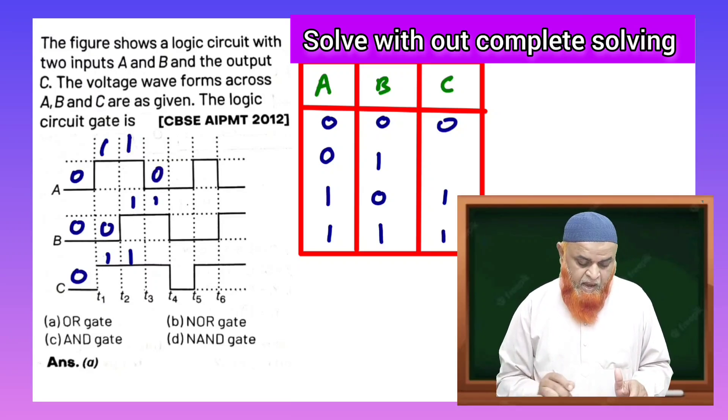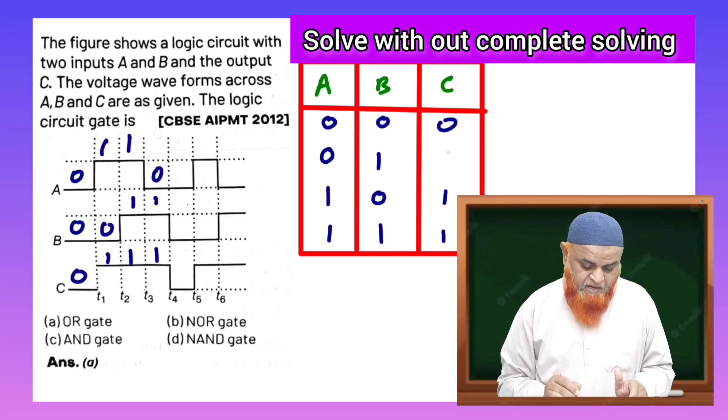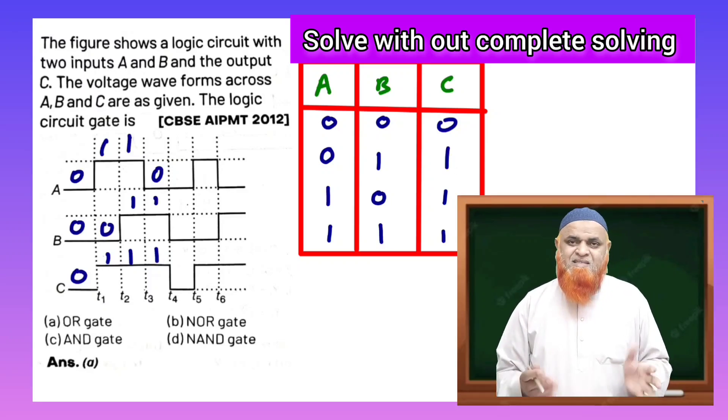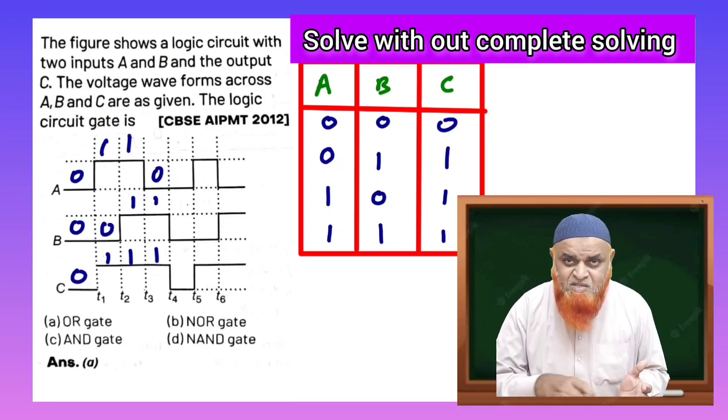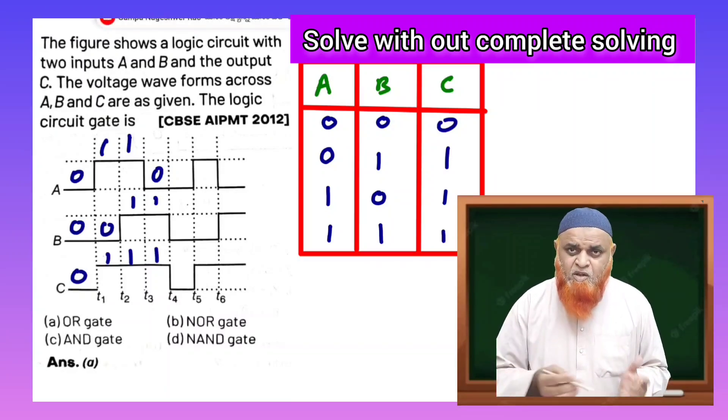And here 0 and this is 1, this is going to be 1. So this is 1. That's it. You didn't even complete the square wave. Within four steps only, get the answer.